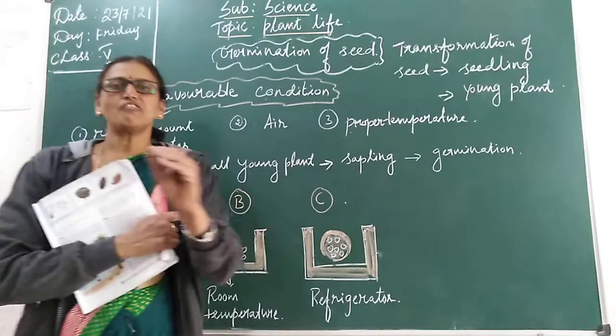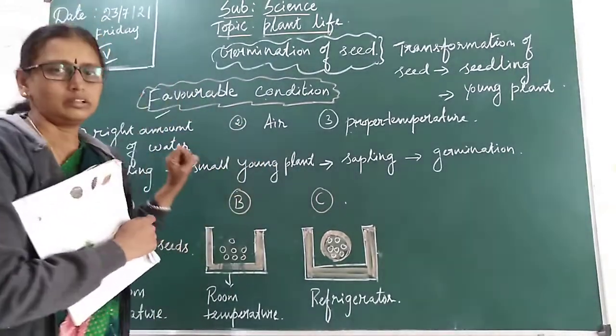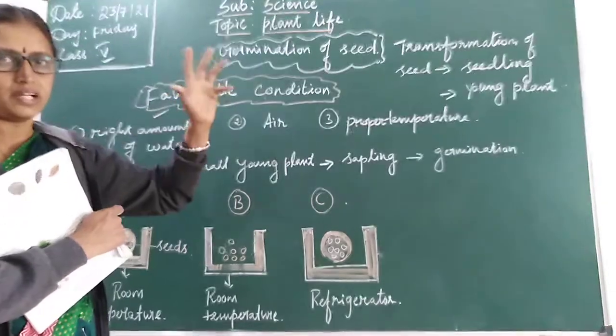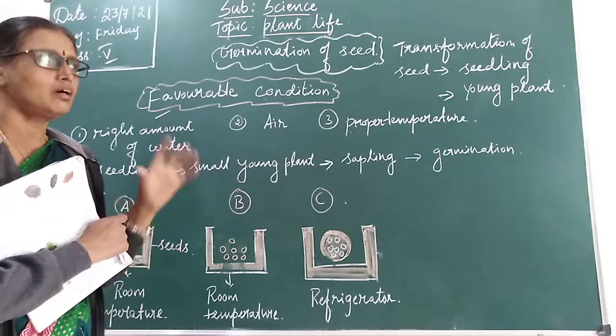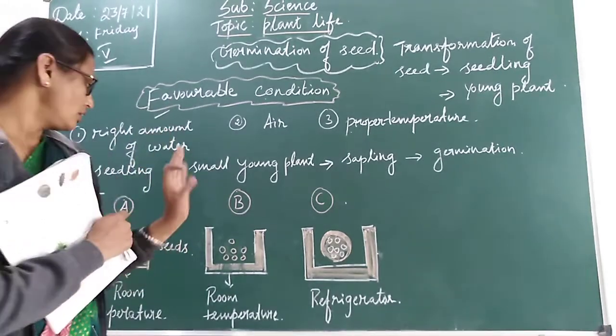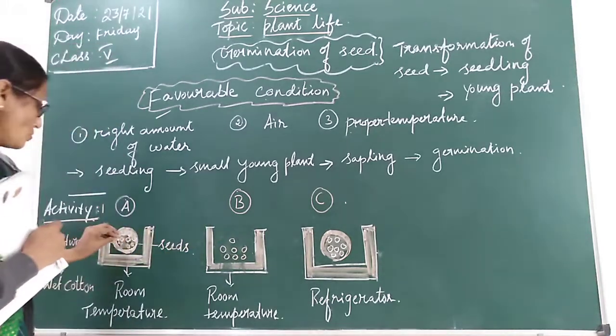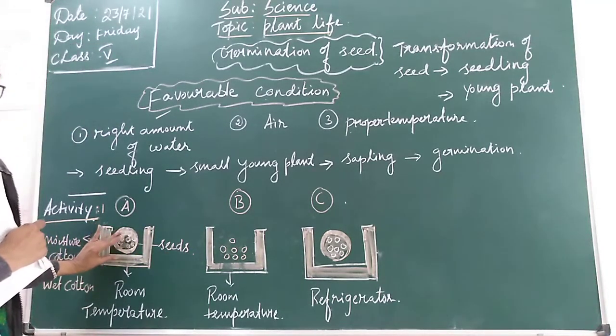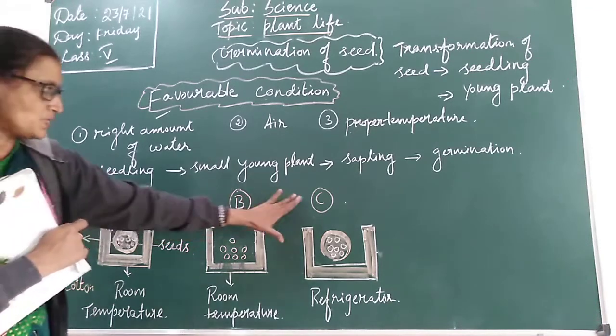Let us perform an activity, children. For the germination of seed, what are the conditions that we need? Okay children, for this you have to take three bowls like this and few seeds and moisture cotton. You have to label the containers A, B, and C.